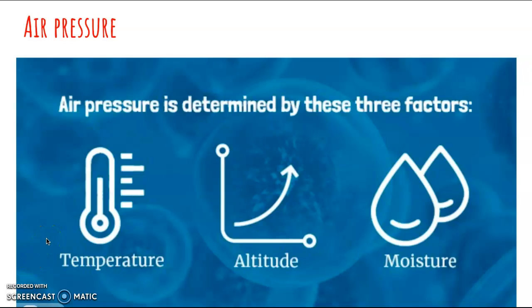Air pressure is determined by three factors: temperature, altitude, and moisture. As air gets warmer, it expands. This expansion causes the density of air to decrease, which results in lower pressure. This explains why air near the equator, which is hot, generally has low air pressure, and air near the north and south poles, which are cold, has high air pressure.